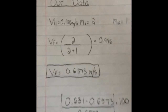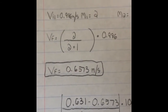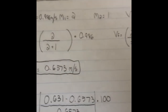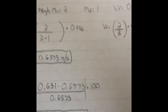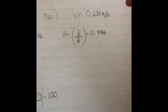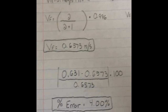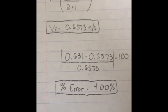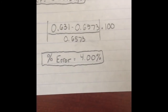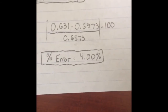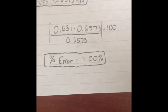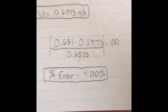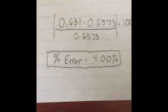Now for our data, we got 0.986 meters per second for our initial velocity of the first mass, and we still have the first mass equaling twice as much as the second mass. When we did our experiment, we got 0.631 meters per second for our final velocity. Plugging it in, we get two-thirds times the initial velocity, which comes out to a final velocity of 0.6573 meters per second. The percent error is |0.631 − 0.6573| / 0.6573 × 100, which gives us a percent error of only 4%.